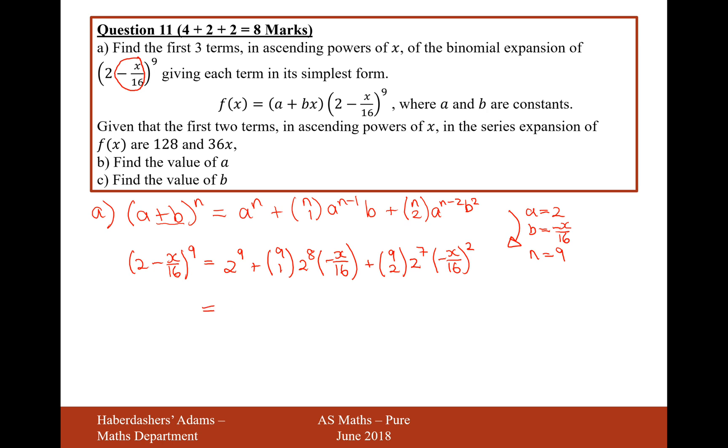So let's now calculate all of these. So the answer for 2 to the power of 9 is going to be 512. Then it's going to be minus, because there's a minus inside this bracket here. So it's 9 choose 1 times 2 to the power of 8, divided by 16. That's going to give us 144x. And then it'll be plus, because there'll be a double negative on this squared term here. So it's 9 choose 2 times 2 to the power of 7, divided by 16 squared, and that will give us plus 18x squared.